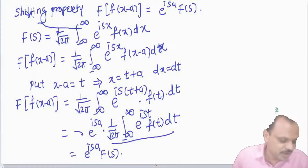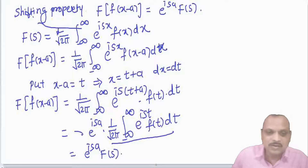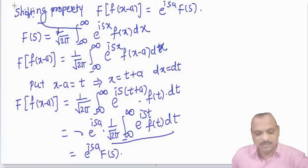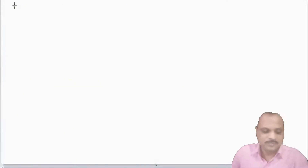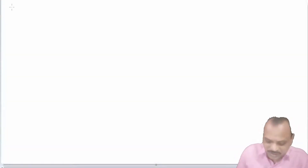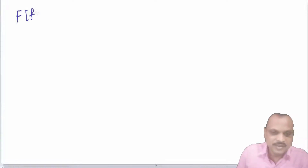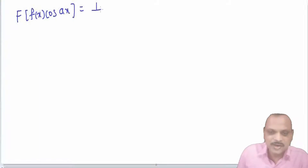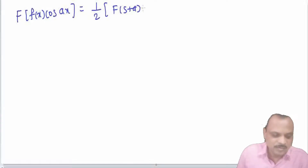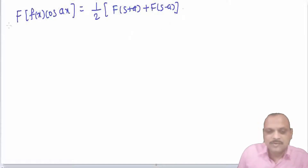There is also a modulation theorem related to this. The Fourier transform of f(x)·cos(ax) equals (1/2)·[F(s + a) + F(s − a)]. We start with the complex Fourier transform definition: (1/√(2π)) ∫ e^(isx) · f(x) dx.